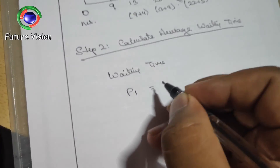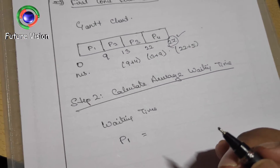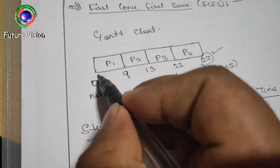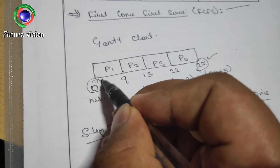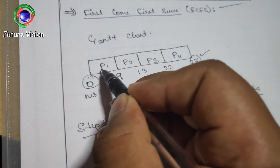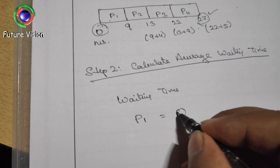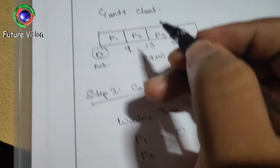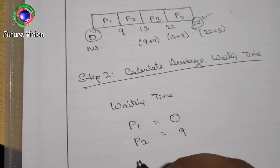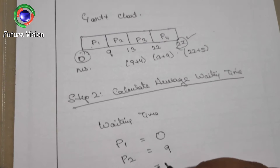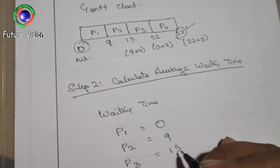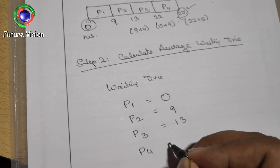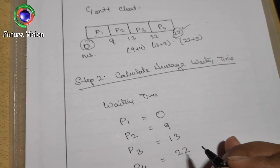Now we calculate the waiting time of each process. On the Gantt chart, the waiting time is the leftmost position for each process. P1 waits for 0 milliseconds to execute. P2 waits for 9 milliseconds. P3 waits for 13 milliseconds. P4 waits for 22 milliseconds.